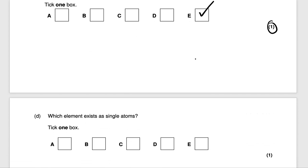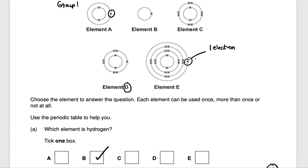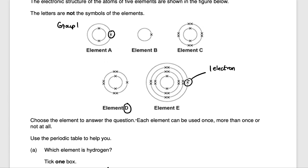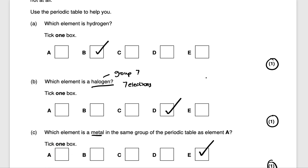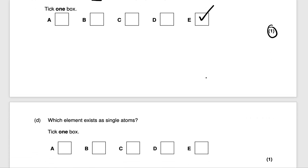The next question says which element exists as single atoms? Elements which exist as single atoms are very unreactive and have a full outer shell. Which of these has a full outer shell? It's element C. Element C has a full outer shell and that's why it's going to be very unreactive — it's part of the noble gases. So the answer is element C, for one mark.